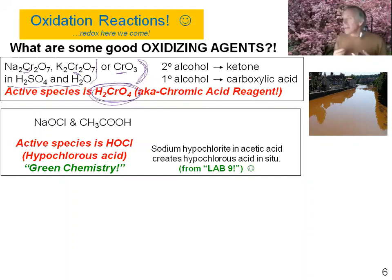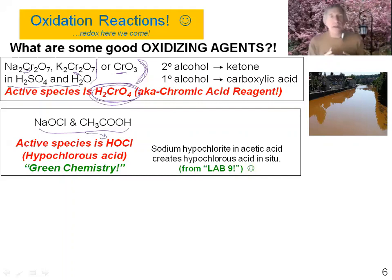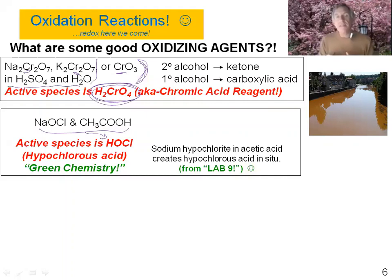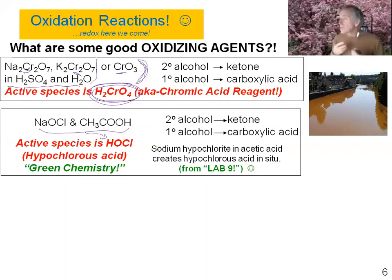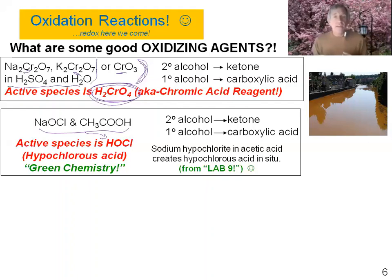These two compounds — sodium hypochlorite and acetic acid — are combined in solution and immediately react to make hypochlorous acid, which is a very good oxidizing agent. It will take our secondary alcohols and turn them into ketones, and our primary alcohols and turn them into carboxylic acids. So as you notice, it's a great substitute for our chromic acid reagent, and that's why we use it in lab today.